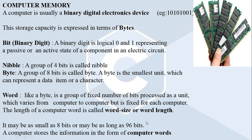Binary numbers are represented as a sequence of zeros and ones. Inside the computer memory, the data is stored as a sequence of binary numbers. Using zeros and ones we can represent any type of data inside the computer memory. The storage capacity of a computer memory is expressed in terms of bytes. A single bit of information is a binary digit, which can have values like logical 0 and logical 1, representing a passive or an active state of a component in an electric circuit.